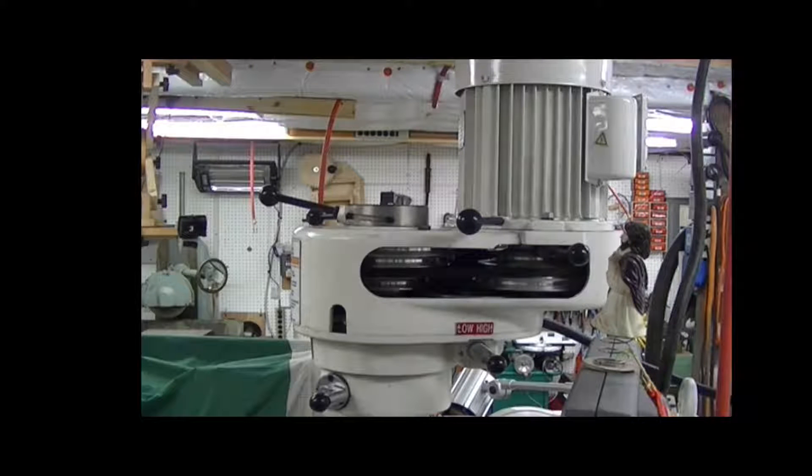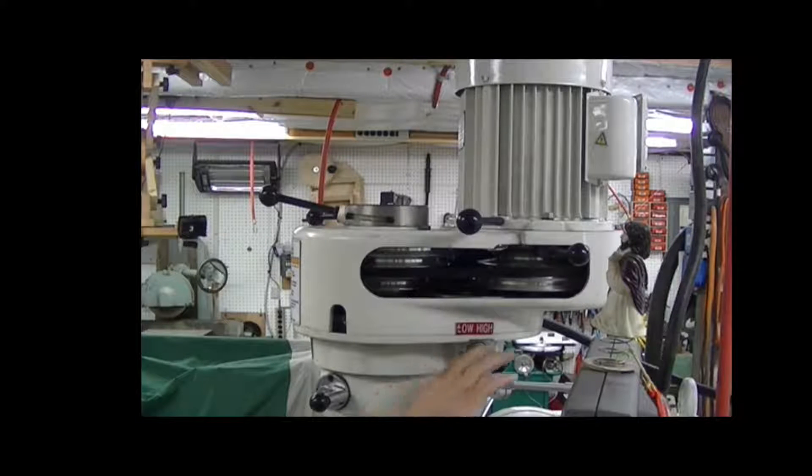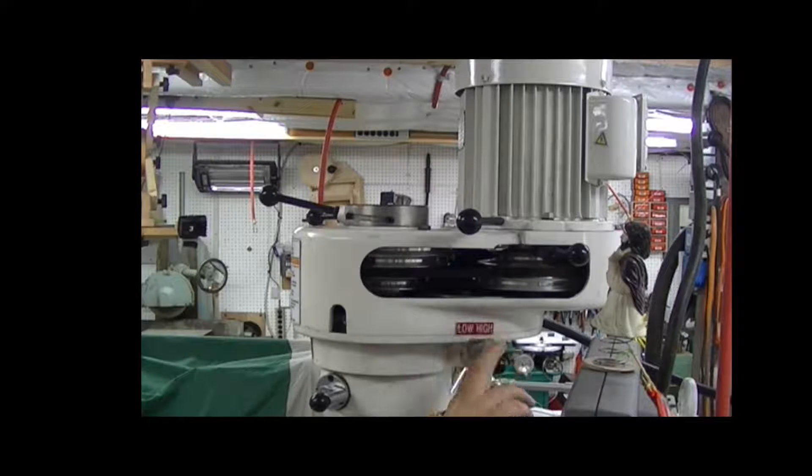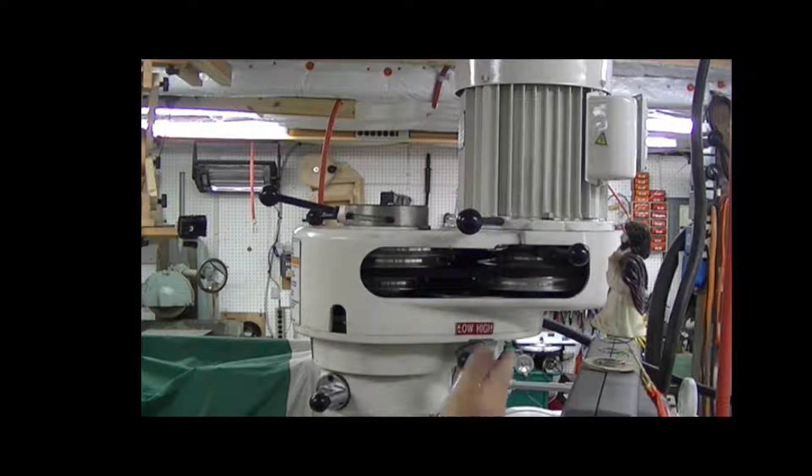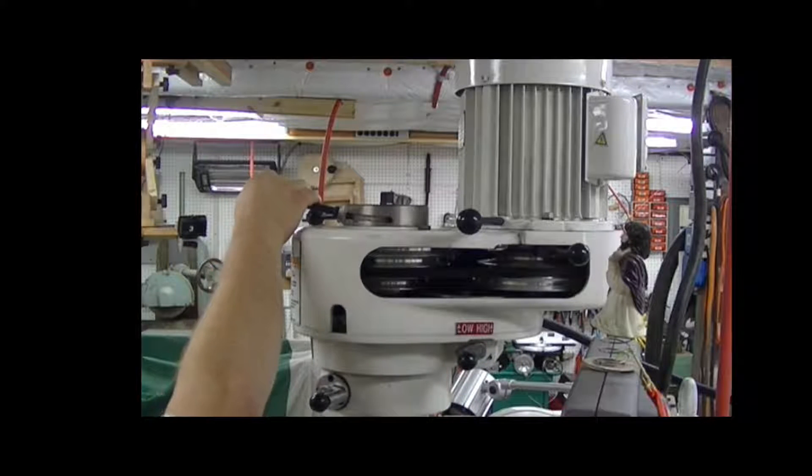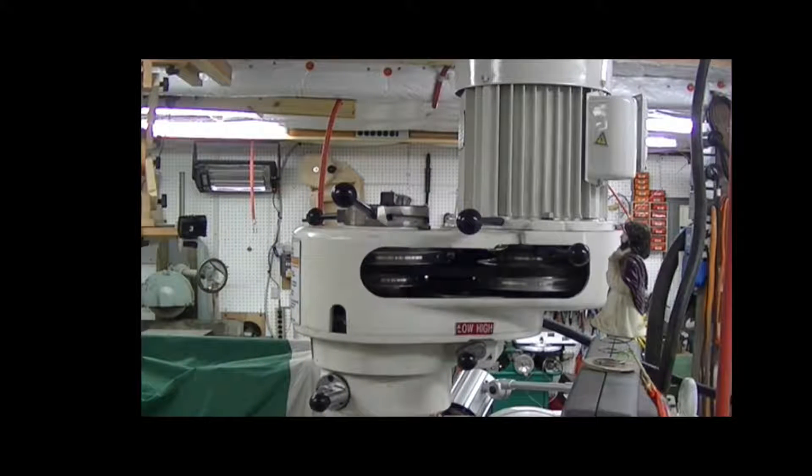To change speeds on this machine, as in spindle speed, there's two different things that you have to do. There are two gear ranges, a high range and a low range. When you switch from high range to low range, you move this lever to the side and now you're in low range. This will give you spindle speeds from 80 to 325 RPM.